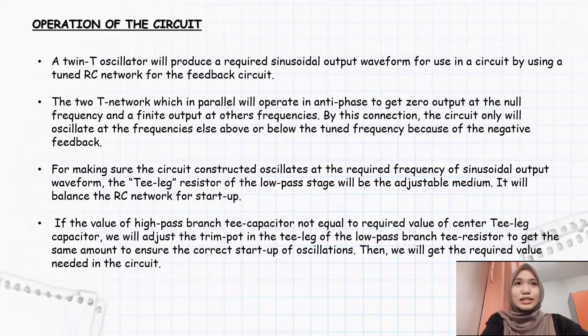By this connection, the circuit only will oscillate at frequencies above or below the tuned frequency because of the negative feedback. For making sure the circuit oscillates at the required frequency of sinusoidal output form, the T-leg resistor of the low-pass stage will be the adjustable medium. It will balance the network for start-up. If the value of the high-pass branch T capacitor is not equal to the required value of center T-leg capacitor, we will adjust the trim pot in the T-leg of the low-pass branch T resistor to get the same amount to ensure the correct setup of oscillations. Then we will get the required value needed in the circuit.